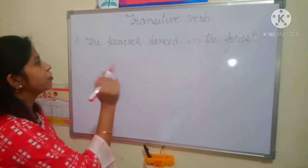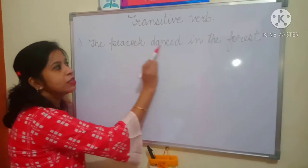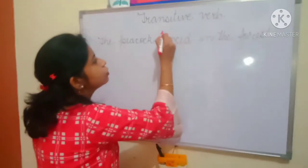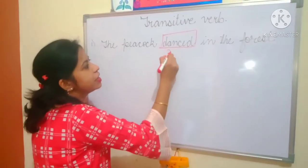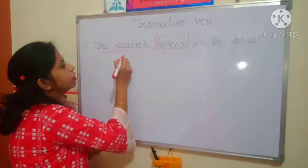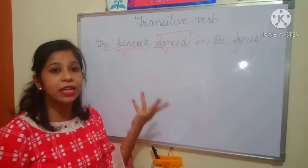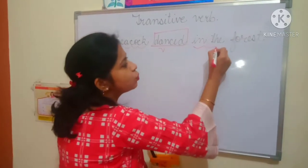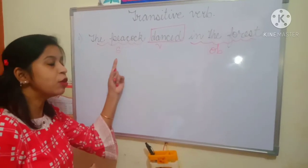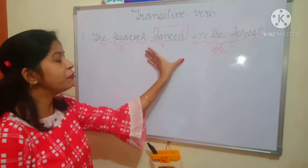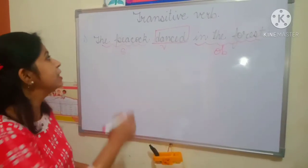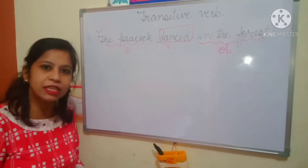Some examples of transitive verb. Look at the given sentence: the peacock danced in the forest. Which is the action performed by the peacock? Danced. So danced is the verb. Who is doing the action? The subject is the peacock. And is there any object where he danced? In the forest — so in the forest is working here as an object. The verb has subject bhi hota hai aur object bhi hota hai, means the verb is in the center with a subject and an object. So it's a complete sentence and a good example of transitive verb.